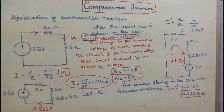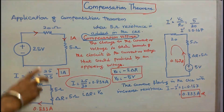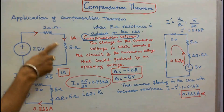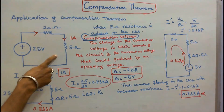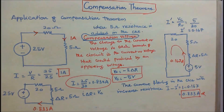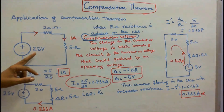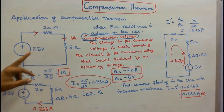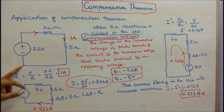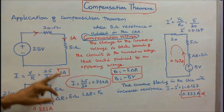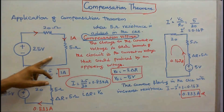Now we will see the application of compensation theorem. Here is a very simple circuit with 25 volts. Two resistors are connected in series: 20 ohms and 5 ohms. The total resistance is 25 ohms. Voltage is 25 volts. I equals V by R, so 25 by 25, which equals 1 amp. The current flowing in the circuit is 1 amp.